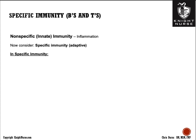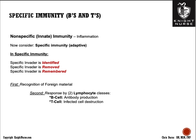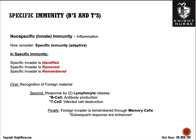When we talk about specific immunity or adaptive immunity, we have significant changes and more complexity. There is a specific invader that is identified, removed, and remembered for subsequent exposures to make the immune system work better next time. First the body recognizes foreign material, then it responds two ways: through B cells for antibody production or humoral immunity, and through T cells which destroy infected host cells. Finally, the foreign invader is remembered through memory cells, so subsequent responses are quicker and more efficient. This is the rationale for immunizations and natural immunity.